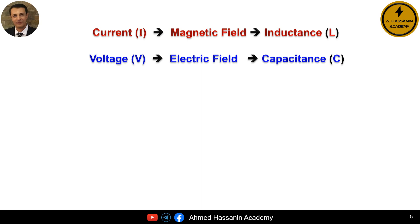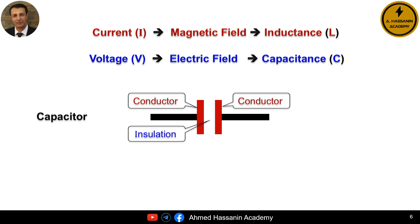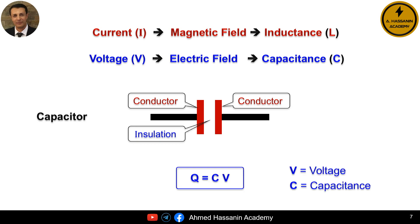Now let us focus together on the topic of capacitance, C. Everyone knows that a capacitor consists of any two conductors or two metal plates separated by an insulating material. The presence of a voltage difference between any two conductors separated by an insulating material causes the voltage difference to store electric charges in the insulating medium or the dielectric material. The amount of electric charges stored is equal to Q, which is the product of the voltage difference V and the capacitance C.